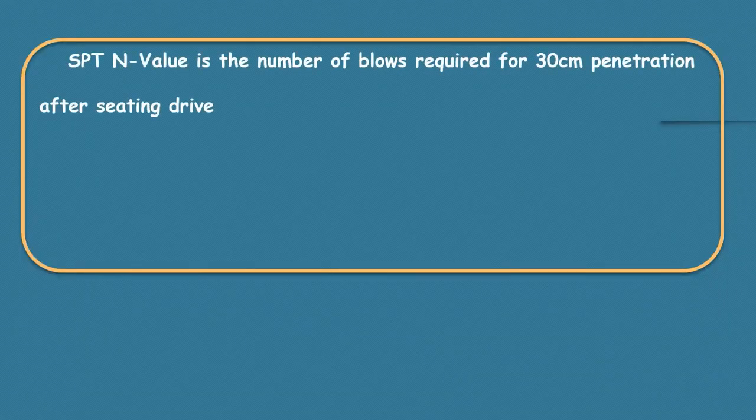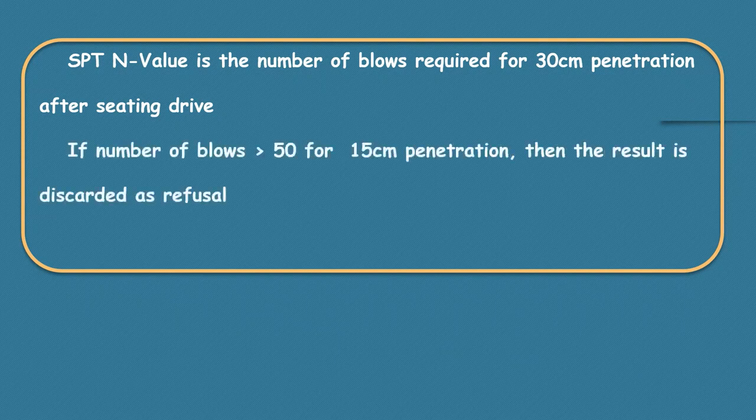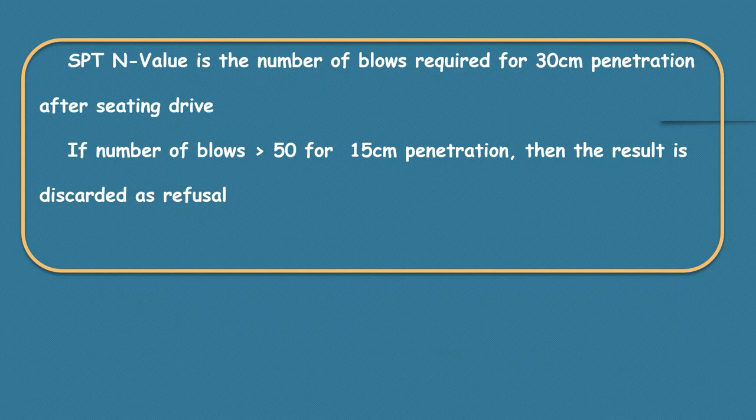If the number of blows are greater than 50 for a 15 centimeter penetration, then it is taken as ground refusal for your penetration, so don't consider that value.